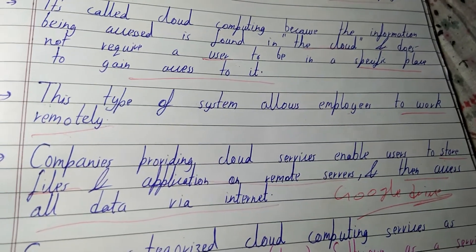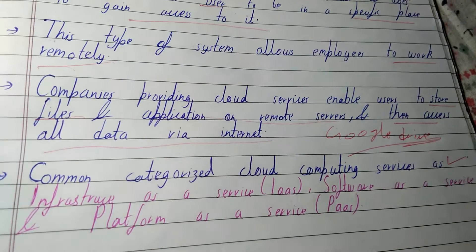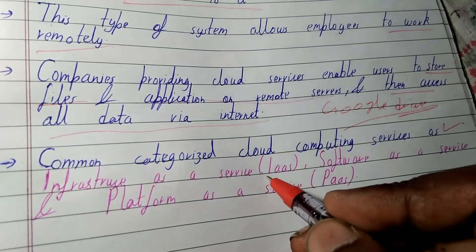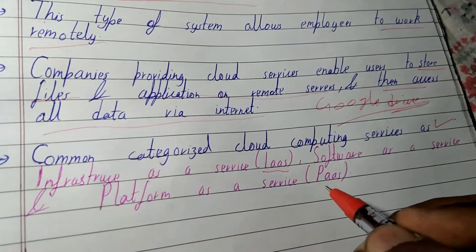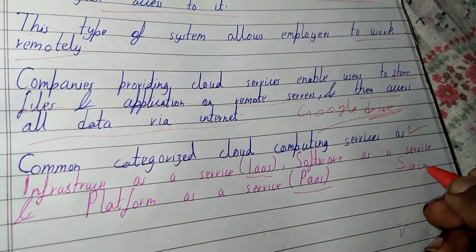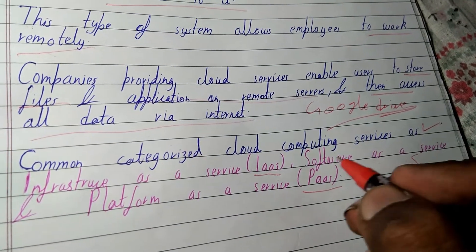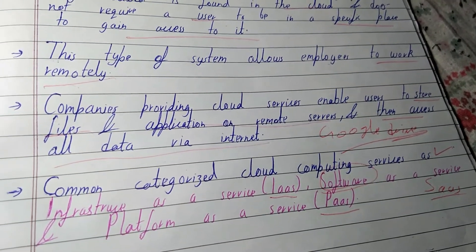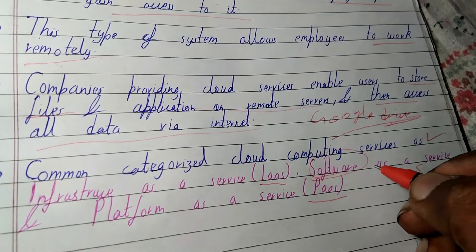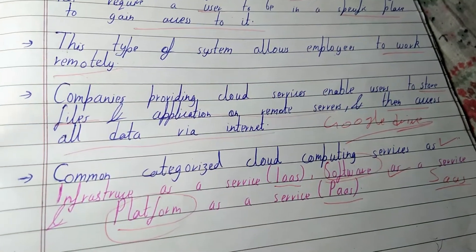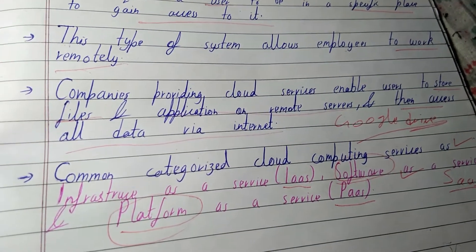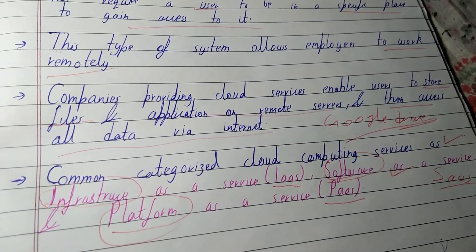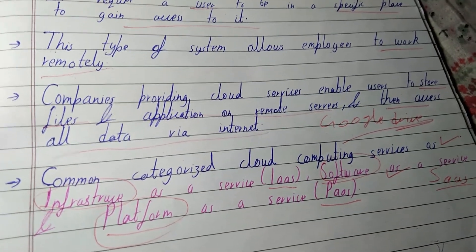Common cloud computing services are Infrastructure as a Service (IaaS), Platform as a Service (PaaS), and Software as a Service (SaaS). Software as a Service means you can access, use, and store data over the internet. Platform as a Service provides the user a platform to connect to the cloud. Infrastructure as a Service is still in a developing phase.